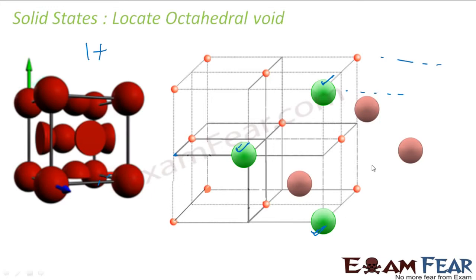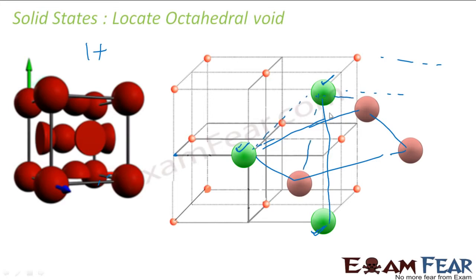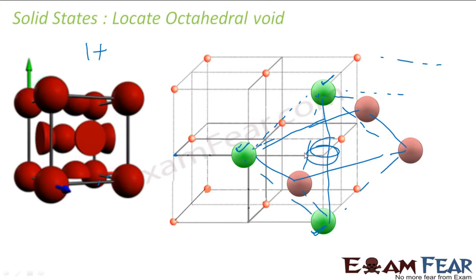These six atoms form one octahedral void. If you see these six atoms forming one octahedral void, this is what the octahedral void looks like. Each of these will be shared by four cells, because there are four cells — one here, one here, one here.